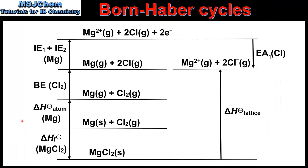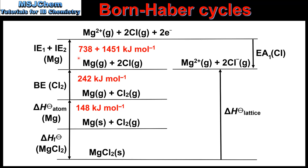So now we'll add the values to the Born-Haber Cycle. Starting with the enthalpy of atomization which is 148 kJ per mole. Next we have the bond energy of Chlorine which is 242 kJ per mole. Next we have the first and second ionization energies of Magnesium. On the right we have 2 times the electron affinity of Chlorine — we need to multiply this value by 2 because we need 2 moles of gaseous Chloride ions. And finally we have the lattice enthalpy which is 2540 kJ per mole.